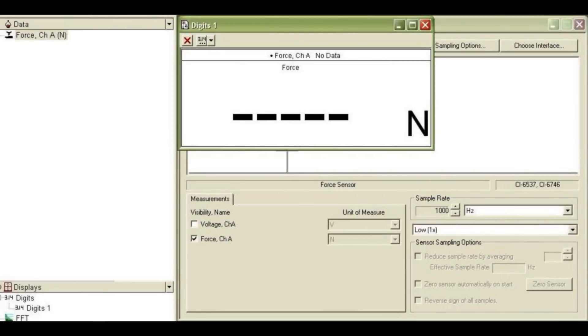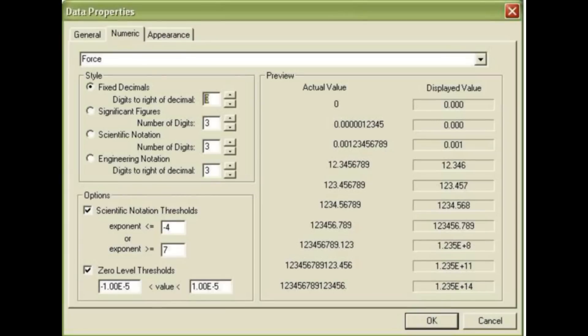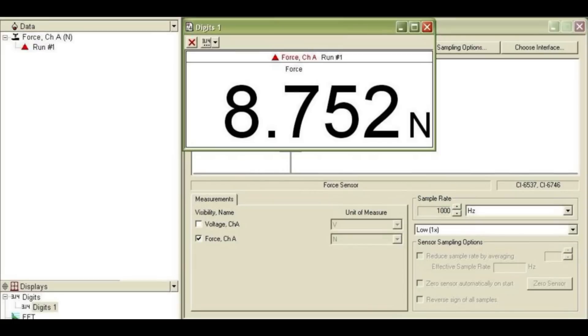In Data Studio, drag and drop a digits display onto the force sensor and adjust the number of digits behind the decimal to 3. Clicking the start button yields the tension force in the string.